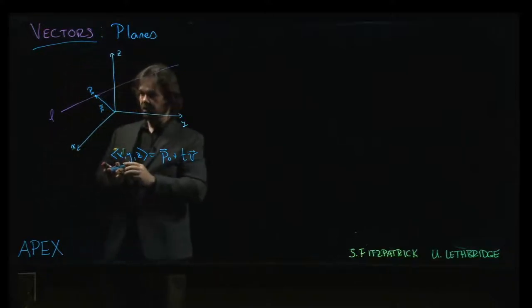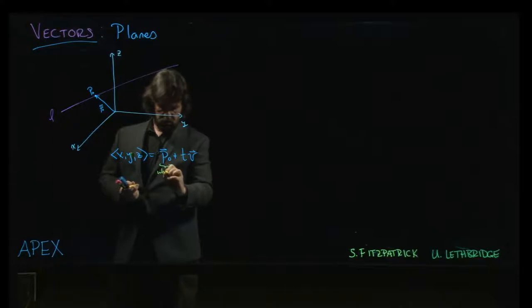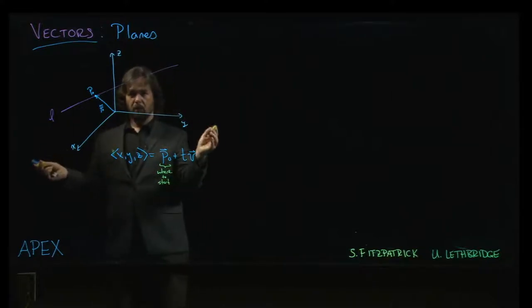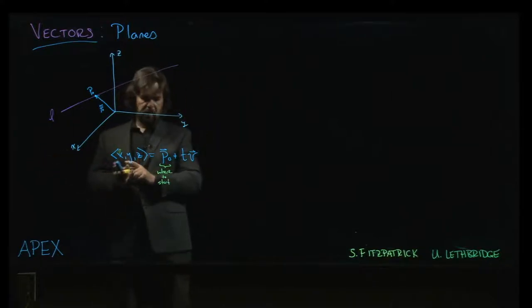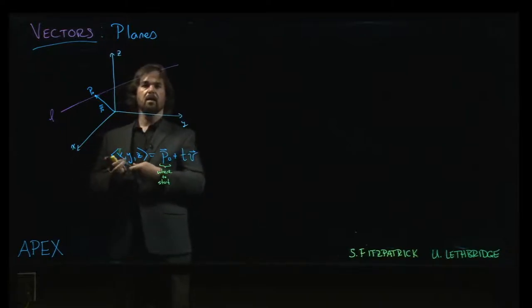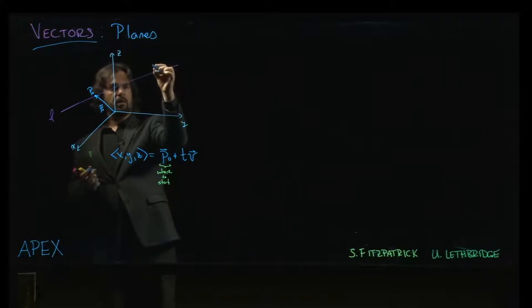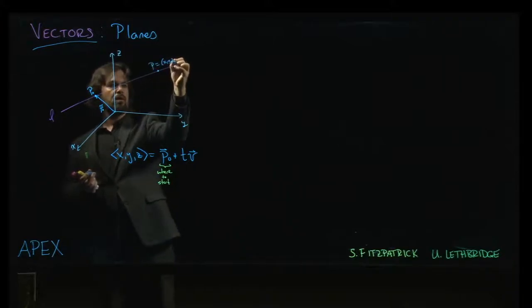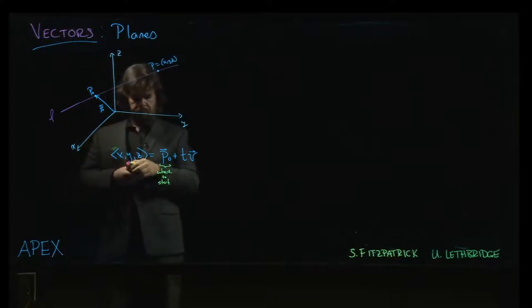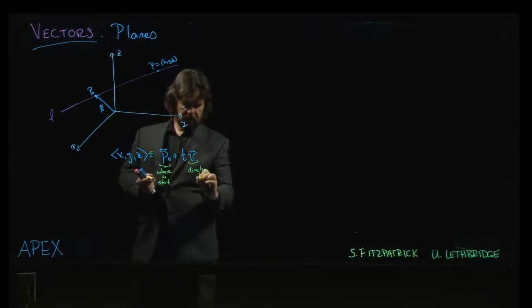So, it's the position vector for that point on the line. So, this is where to start. We want to describe all points on the line, how to get to any point on the line. So, p0 tells us where to start. We agree on a starting point. And we want to end up over here at some point p.